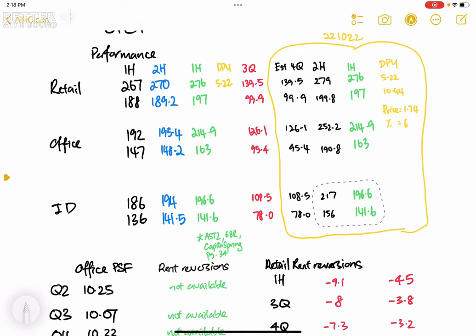So I'm also baselining my distribution per unit. For the first half, it was able to give 5.22 cents, so for the entire financial year I'm making an assumption that it's going to give 10.44. And based on the current price right now of 1.74, the yield is 6%. Yes, your next question will be saying that, yeah, but there are some other business risks like the interest.